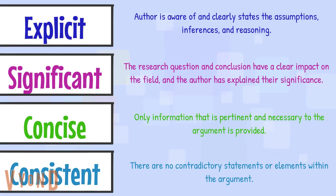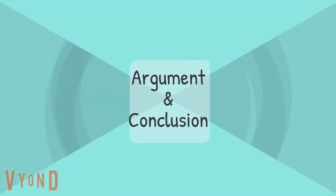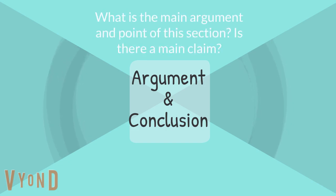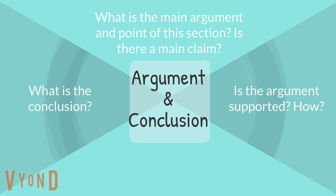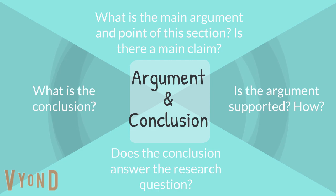To guide your reading, you should be able to answer the following questions. When looking at the argument and the conclusion, we are asking: what is the main argument and point of the section? Is there a main claim, and if not, do you understand the author's intent? Is the argument supported and how? How is the quality of the supporting points? What is the conclusion — there might be more than one. Does the conclusion answer the research question? How acceptable are those conclusions?